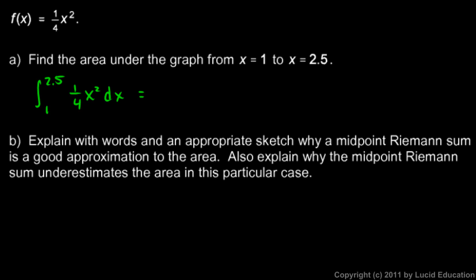we get x³/3, and we already have this 4 down here, so this ends up being x³/12 evaluated from 1 to 2.5. So this is 2.5³/12 - 1/12. And I punched that into the calculator, and I got 1.21875.